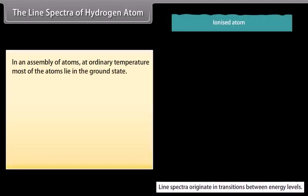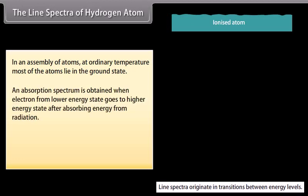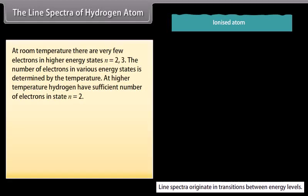The line spectra of hydrogen atom. In an assembly of atoms at ordinary temperature, most of the atoms lie in the ground state. If white light is passed through such an assembly of hydrogen atoms, the transmitted light will not have radiations of various wavelengths. It is the absorption spectrum of hydrogen corresponding to Lyman series. An absorption spectrum is obtained when electron from lower energy state goes to higher energy state after absorbing energy from radiation. The frequency of absorbed radiation is given by hν_HL = E_high - E_low. At room temperature, there are very few electrons in higher energy states, n = 2 and above.